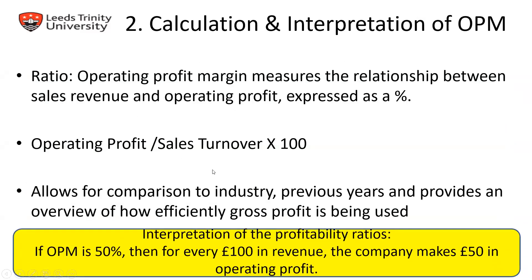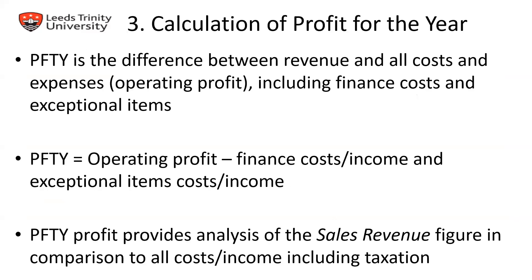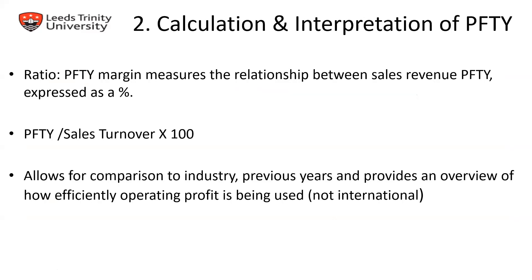The formulas are: gross profit divided by sales turnover multiplied by 100; operating profit divided by sales turnover multiplied by 100; and profit for the year divided by sales turnover multiplied by 100. It is important to express these as a percentage.